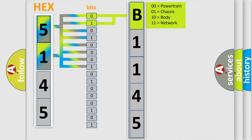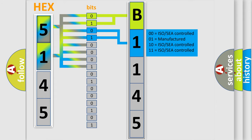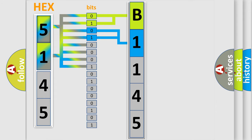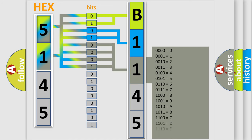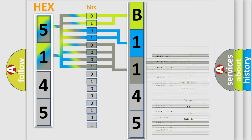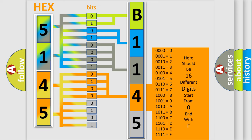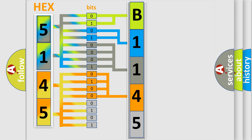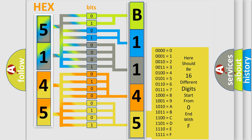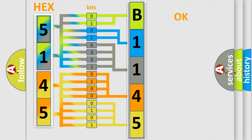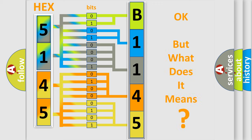By combining the first two bits, the basic character of the error code is expressed. The next two bits determine the second character. The last bits of the first byte define the third character of the code. The second byte is composed of a combination of eight bits. The first four bits determine the fourth character of the code, and the combination of the last four bits defines the fifth character. A single byte conceals 256 possible combinations. We now know in what way the diagnostic tool translates the received information into a more comprehensible format.